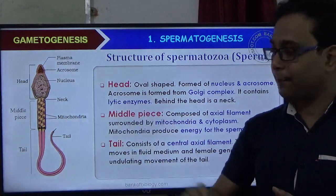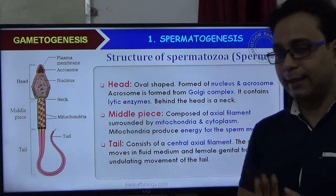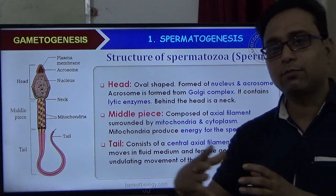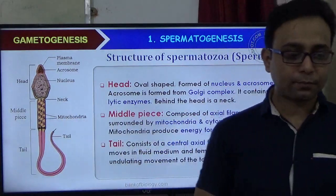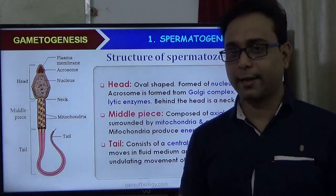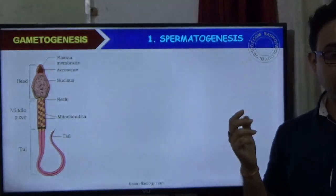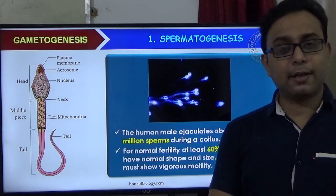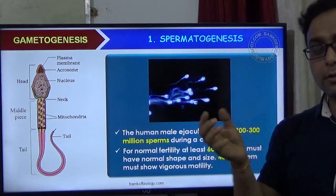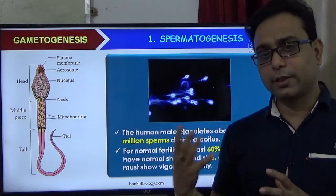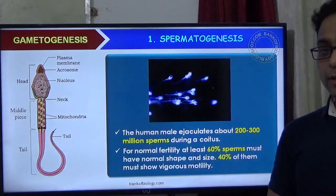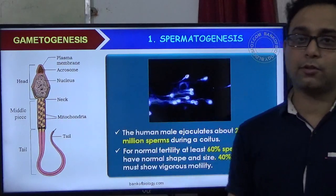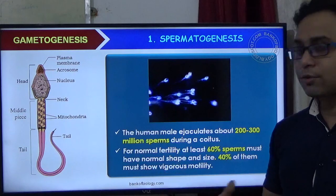So the structure of the sperm includes: the head, the middle piece, and the tail. The axial filament helps with motility through the female genital tract. A human male produces approximately 300 million sperm in one ejaculate during sexual intercourse. That is a very huge number.